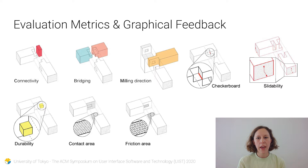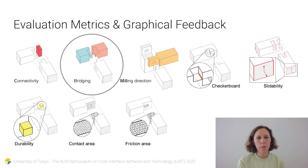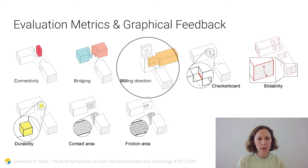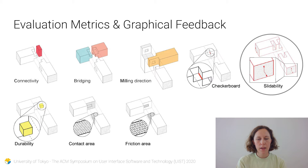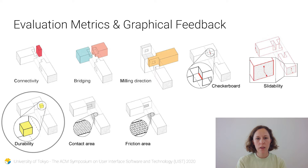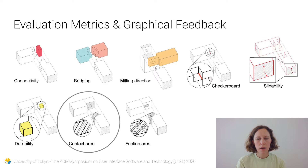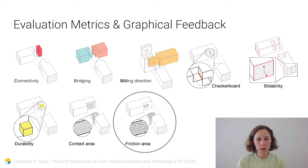This is an overview of all eight evaluation metrics with graphical feedback that we consider. These are practical criteria including connectivity, bridging, milling direction, checkerboard pattern — which is problematic for fabrication — slidability, which I showed in the interface demo, durability in regard to the fiber direction, contact area, and friction area.